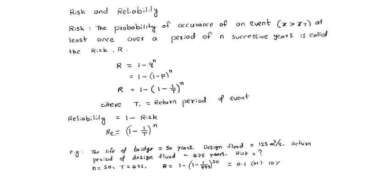Reliability equals 1 minus R, which equals 0.9 or 90 percent. So the risk of any structure can be determined using this simple formula.